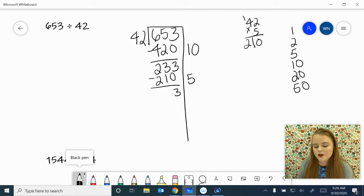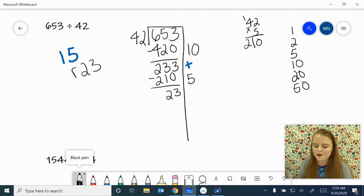3 minus 0 is 3. 3 minus 1 is 2. I guess I'm already done, because I know that I can't say 23 minus 42. So our remainder is going to be 23. And all we do to solve for the answer is add up our friendly numbers. So 10 plus 5 is 15. Remainder 23. That one was pretty easy. Let's move on to the second one, because I bet it's going to be a little bit more challenging.